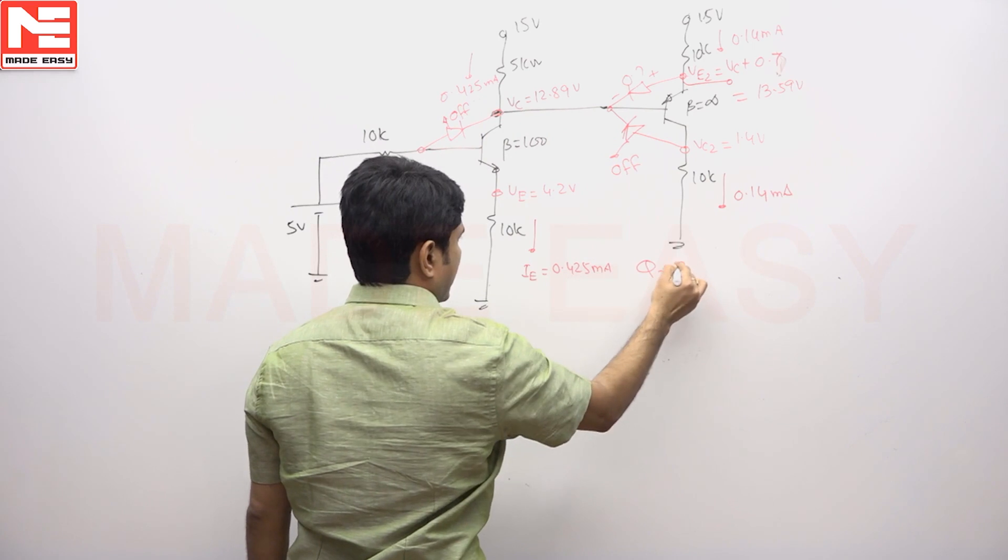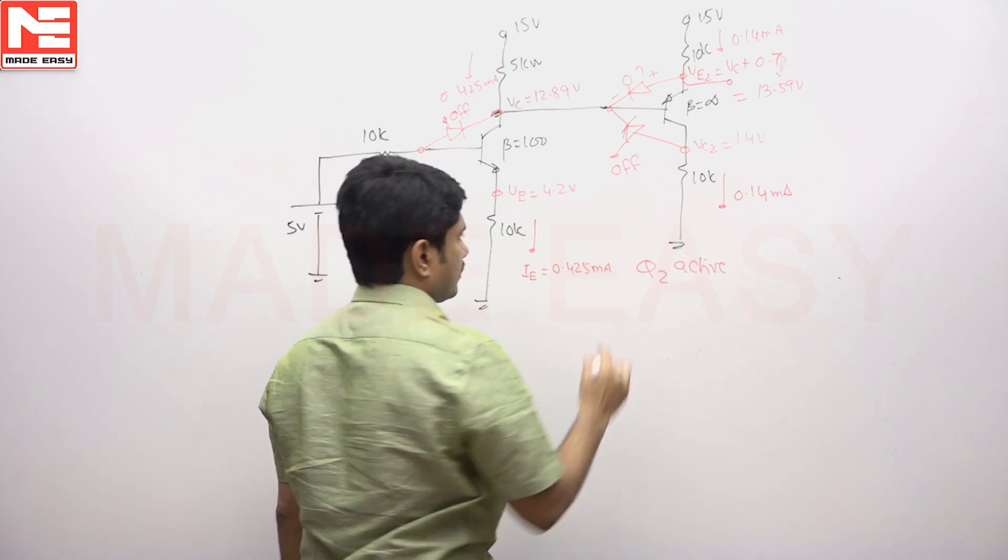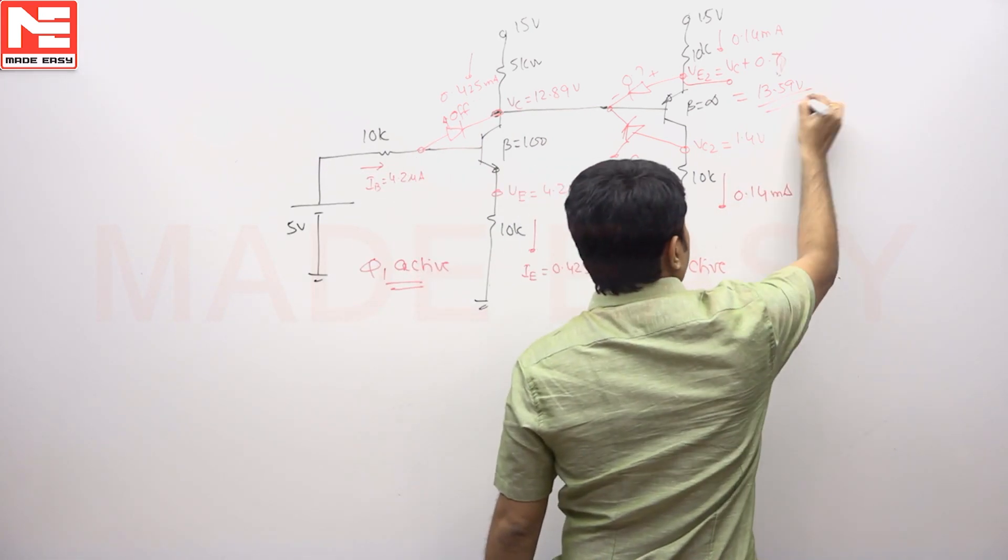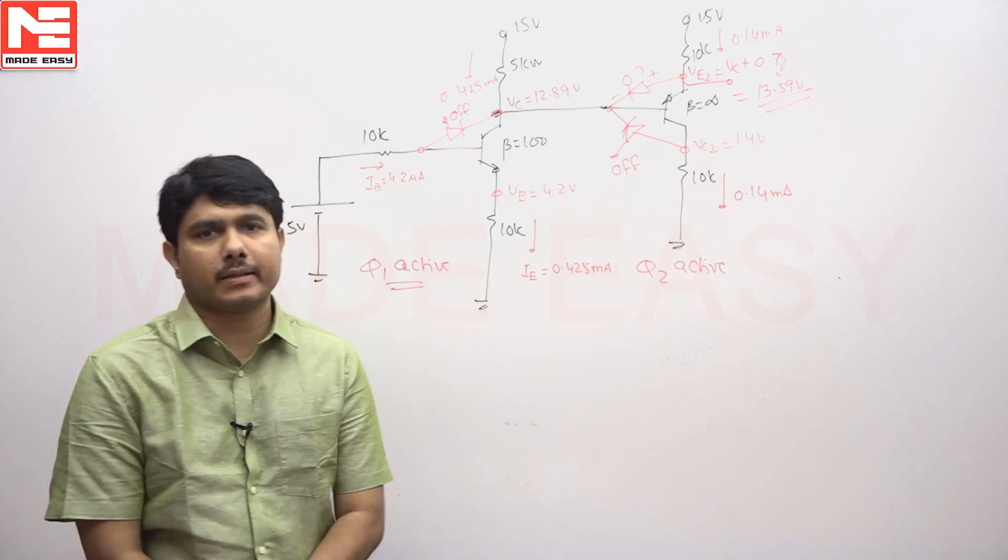So Q2 is also in active. Both are in active. Whatever I assumed is correct, so I think this is the correct answer. This must be the correct answer: 13.59 is the correct answer.